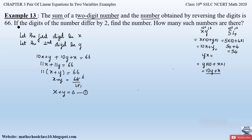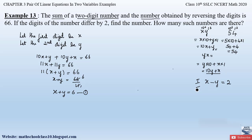The second condition states that the digits differ by 2. The digits are x and y, so we can write x − y = 2 as equation 2. However, we can also write y − x = 2 as a second possibility. Both conditions are valid, so we will solve for both cases separately.